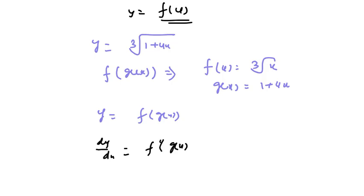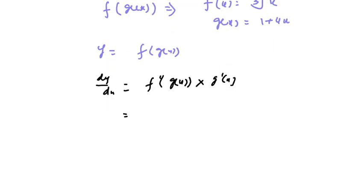f'(g(x)) is 1/3 times (1 plus 4x) raised to the power 1/3 minus 1, multiplied by the differentiation of g(x). Since g(x) is 1 plus 4x, that's 4. So this is 4/3 times (1 plus 4x) raised to the power minus 2/3.